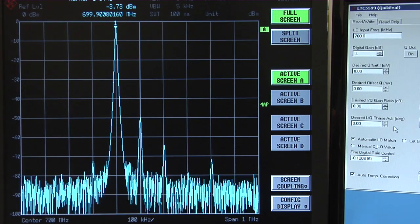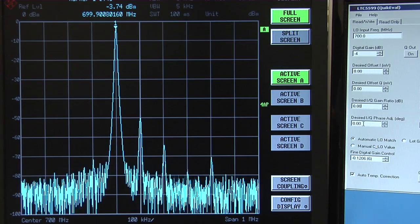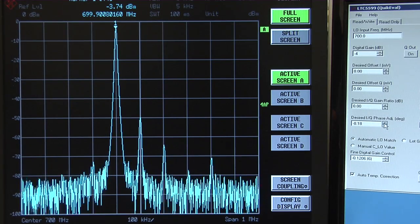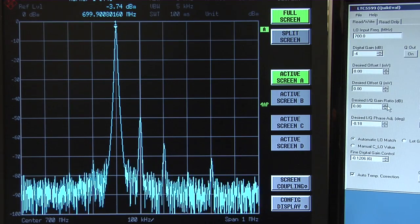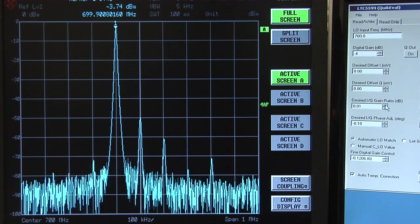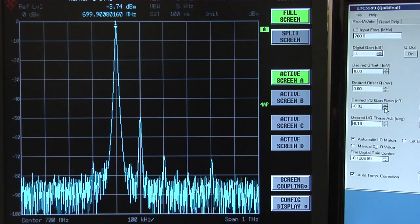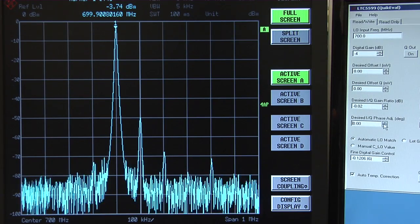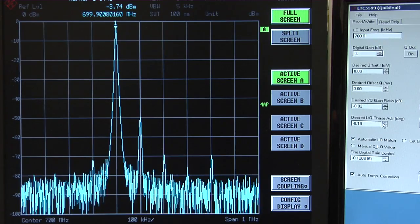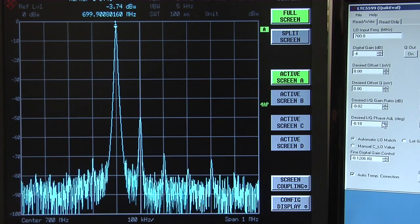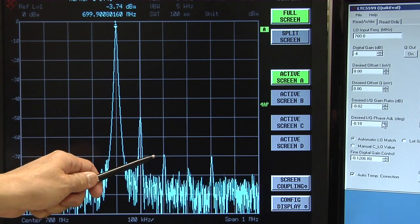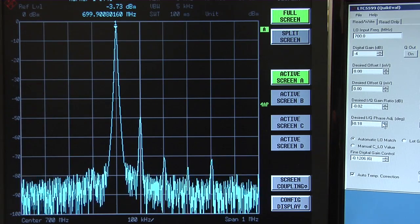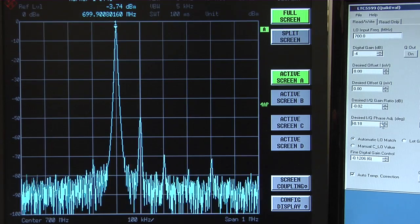To dial in the best sideband suppression, we first change the phase balance register. We adjust until the image is at the minimum. Next, we adjust the I and Q gain ratio register in similar fashion and find the minimum. These two registers are interactive, so you may need to check and readjust iteratively until the optimum suppression is reached. By doing so, we have improved the sideband suppression to about minus 66 dBc below the carrier.